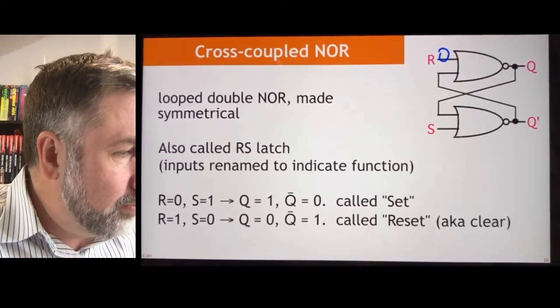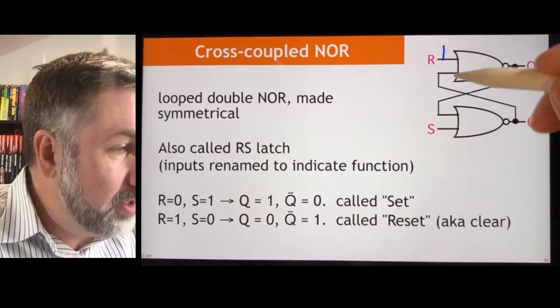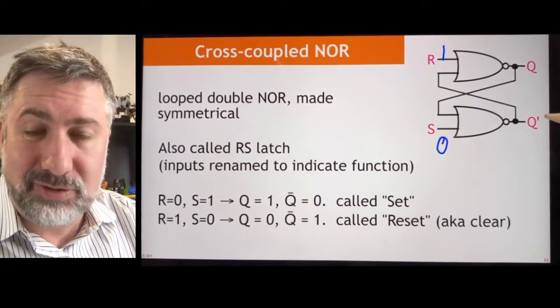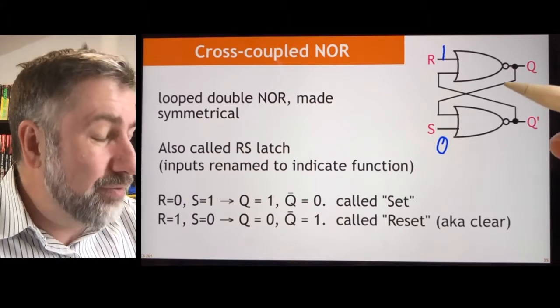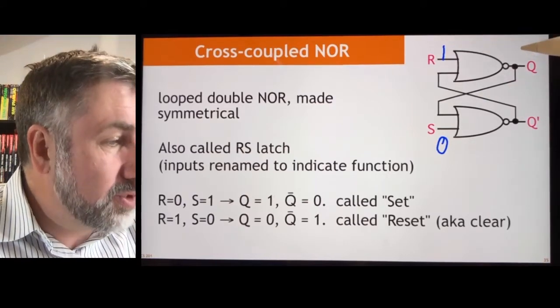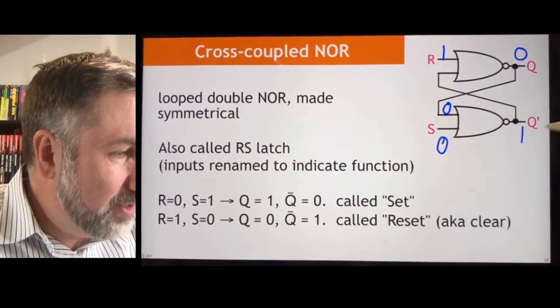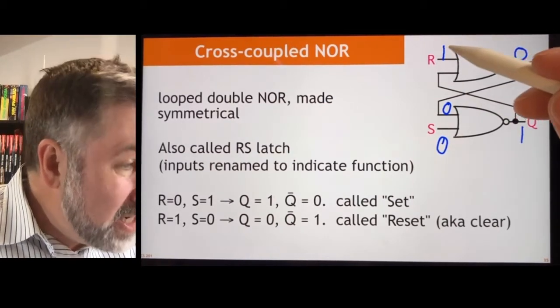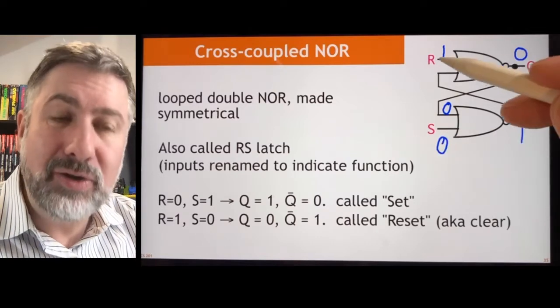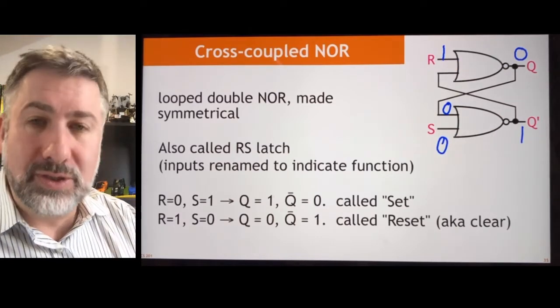Let's try the other way. What happens if we put a 1 here and a 0 here? Well, we expect it because it's symmetrical to work exactly the same way. And in fact, it does. A 1 forces this to be a 0. This 0 means these are both 0. That means that's a 1. And we have now reset to 0. Set to 1, reset to 0. We can store a 0, we can store a 1.